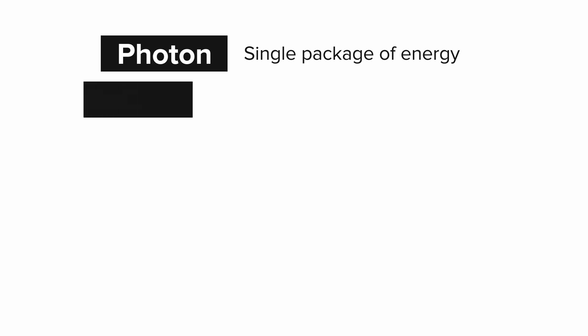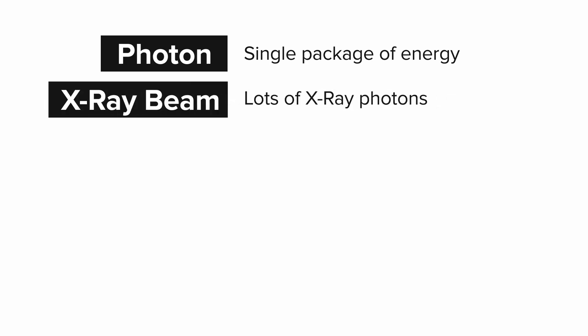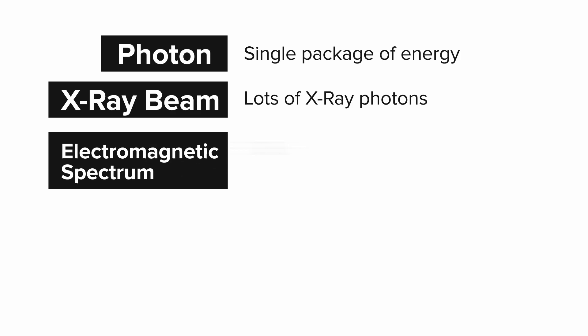In summary, here's some of the terms that we discussed. A photon refers to a single package of energy. An X-ray beam is made of X-ray photons. We also talked about the electromagnetic spectrum. This refers to the full range of photon energies. The electromagnetic spectrum includes X-rays, but also lower energy photons like visible light and higher energy photons like gamma rays.